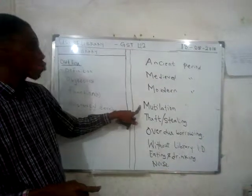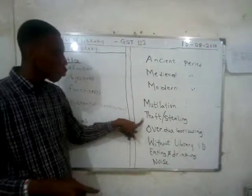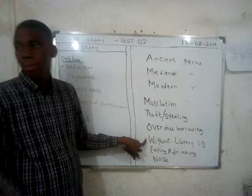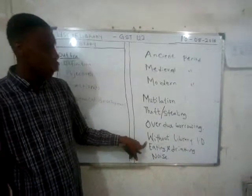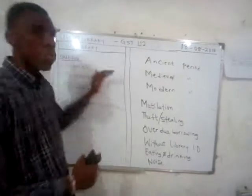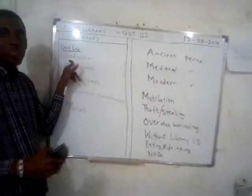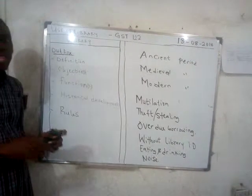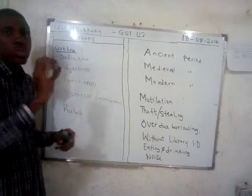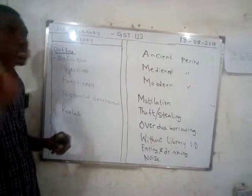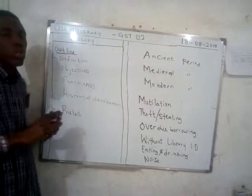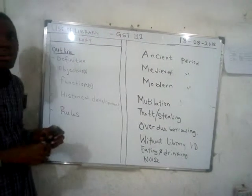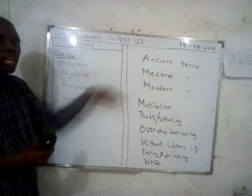In summary: one must not destroy library books — known as mutilation; one must not let borrowed books become overdue; one must enter the library with a valid ID card; eating, drinking, and noise are not tolerated. We covered the definition of a library as an organized collection of printed or published books, its primary objective of serving the interest of its users, its functions including disseminating information, and its historical development through the ancient, medieval, and modern periods.